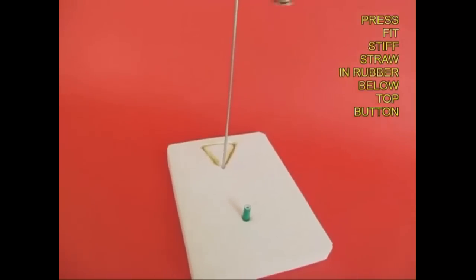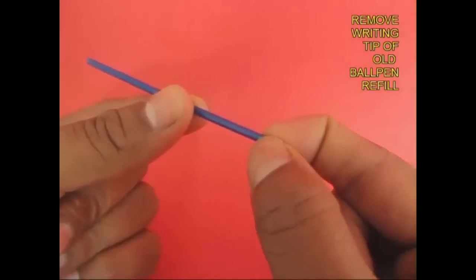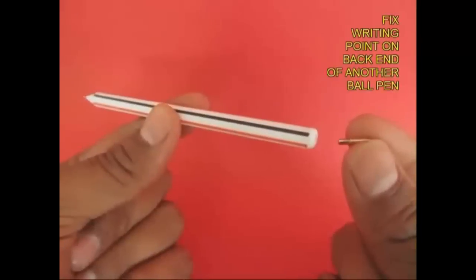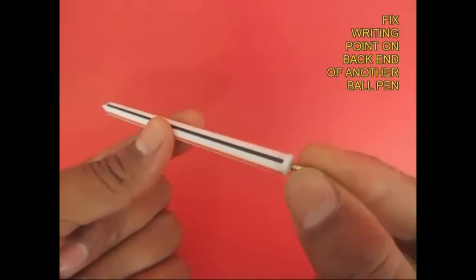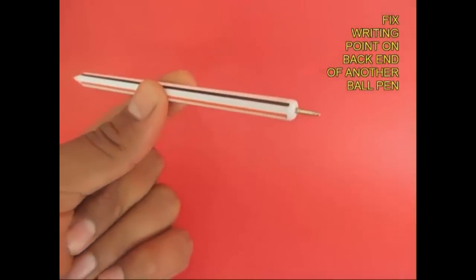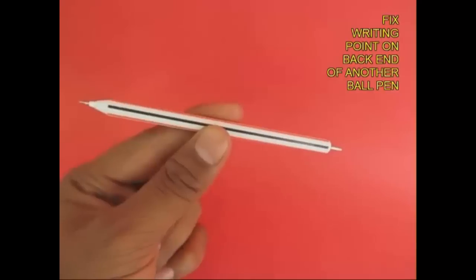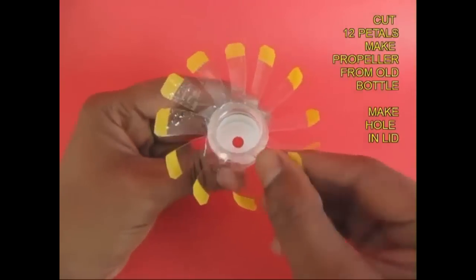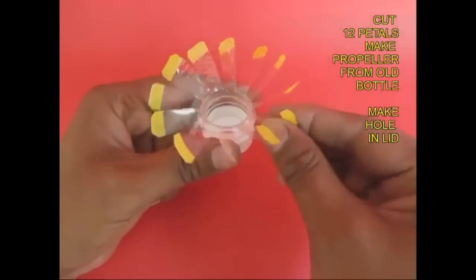Now take the needle of an old refill and put it on the other end of the pen. Now this pen will have nibs on both the sides. Now make a 12-petal propeller from an old bottle.